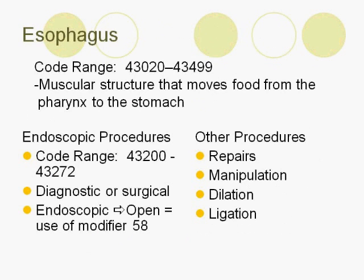The esophagus is a muscular structure that moves food from the pharynx to the stomach. It does this by way of peristalsis. Procedures to code for the esophagus include endoscopic procedures, which can be diagnostic or surgical, and other procedures such as repairs, manipulation, dilation, and ligation.